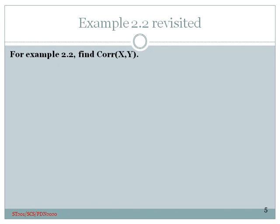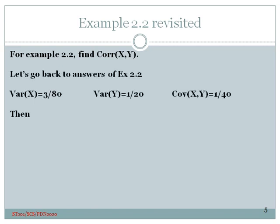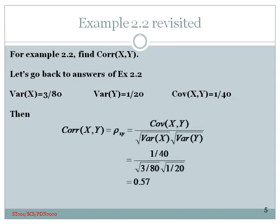Let's see how we can calculate the correlation coefficient using Example 2.2. From that example, we found: the variance of x is 3/80, the variance of y is 1/20, and the covariance between x and y is 1/40. Applying the definition, we place 1/40 in the numerator, then take the square root of 3/80 for the standard deviation of x, and the square root of 1/20 for the standard deviation of y. Computing (1/40) divided by (sqrt(3/80) times sqrt(1/20)), we get 0.57.